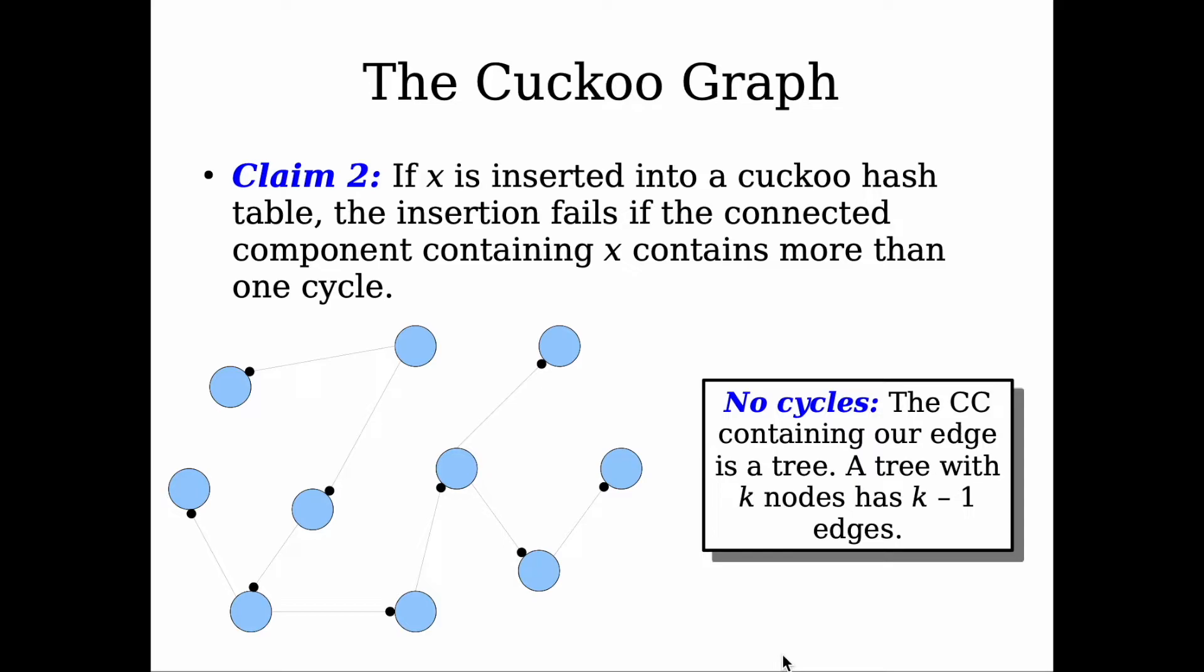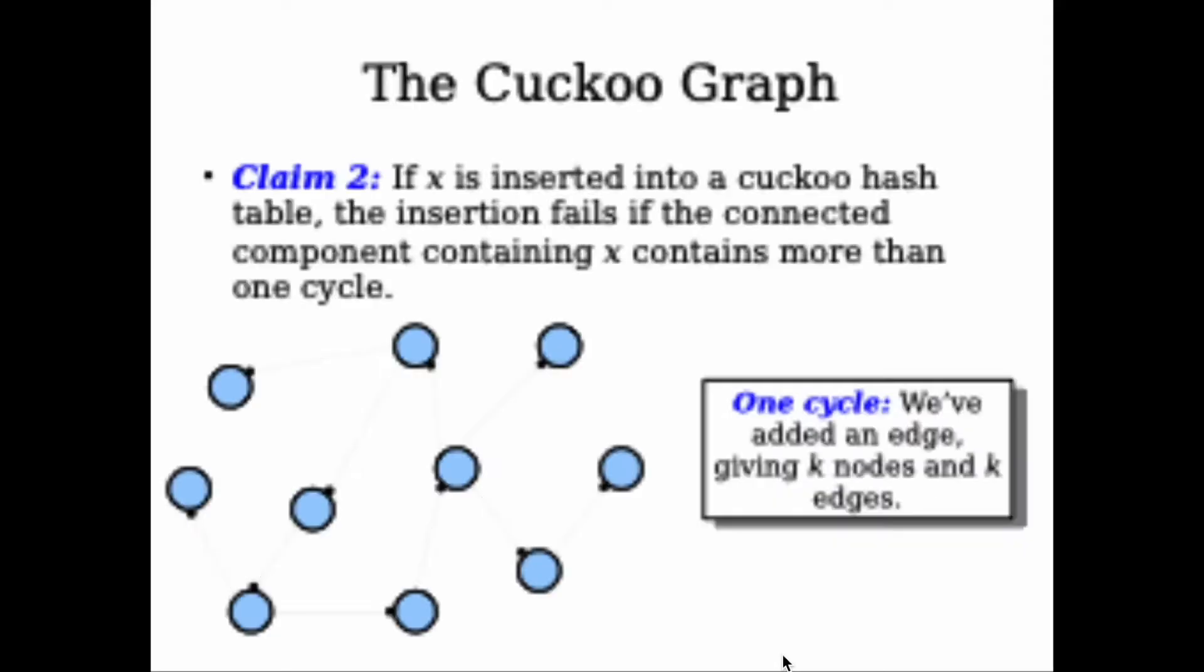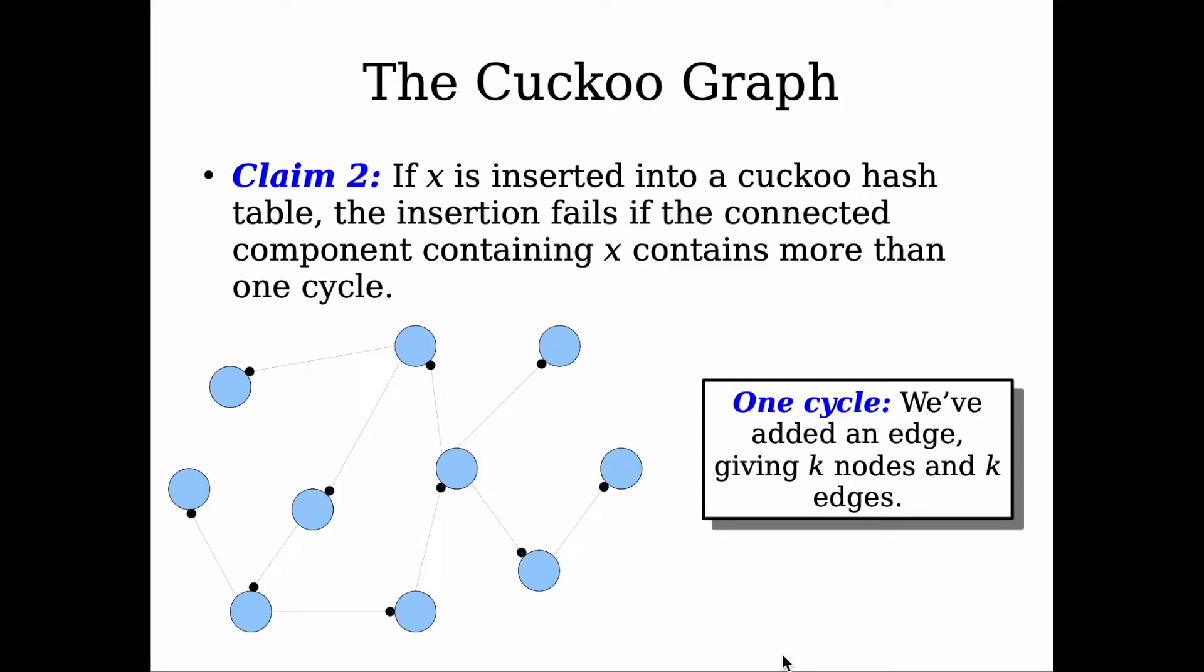That's a property of a tree. In our cuckoo hash table, this is equivalent to having k slots because we have k nodes with k minus one edges, equivalent to k minus one elements. So all the elements fit the available slots: we have k minus one elements and we have k slots. That's for the first case.